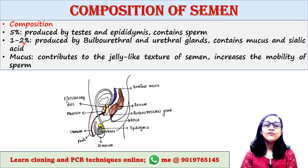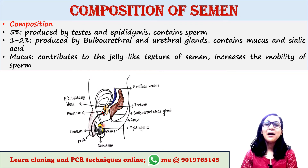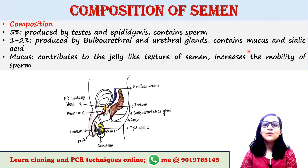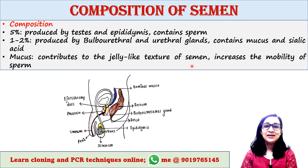5% of the fluid of semen is produced by the testis and epididymis, which contains sperm. 1-2% of the fluid is produced by the bulbourethral gland and urethral gland, which contains mucus and sialic acid. Mucus contributes to the jelly-like texture of semen and also increases the mobility of sperm cells in the vagina.